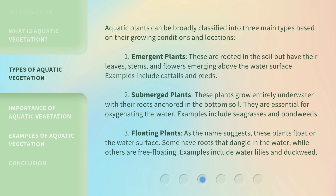Third, floating plants. As the name suggests, these plants float on the water surface. Some have roots that dangle in the water, while others are free-floating. Examples include water lilies and duckweed.